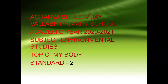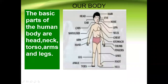Hello children. We are doing environmental studies and the topic that we are doing today is my body, our body. The basic parts of the human body are head, neck, torso, arms and legs, as you can see in the picture over here. Now we will be studying about each body part in detail.